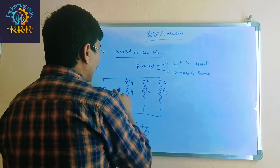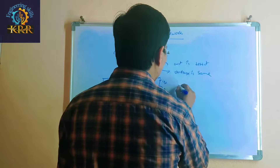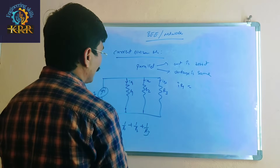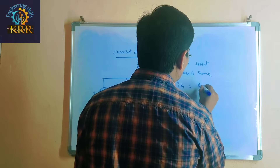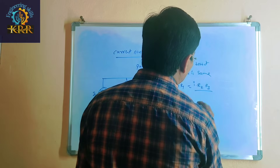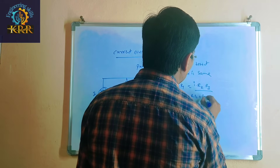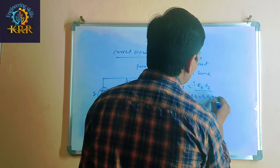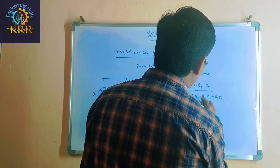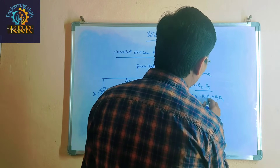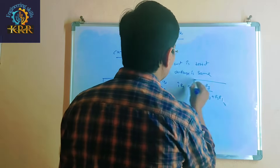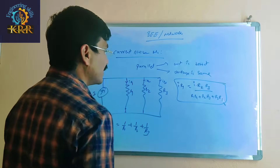To find the current at a particular branch — for example, current at R1 — you take the total current multiplied by the remaining two resistances R2 and R3 in the numerator, divided by R1 plus R2 plus R3 in the denominator. This gives you the current at branch R1.